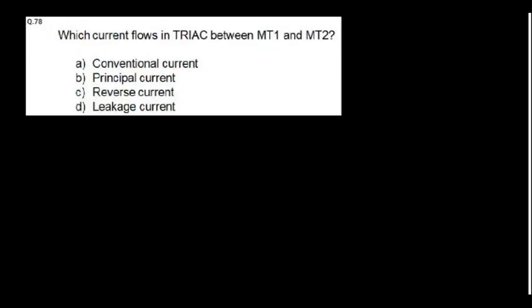Which current flows between MT1 and MT2 in a triac? That is the main current — the principal current — which is the load current that flows.